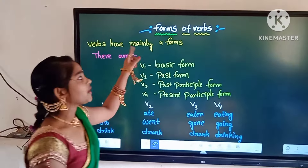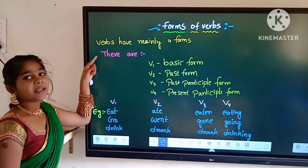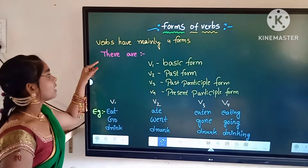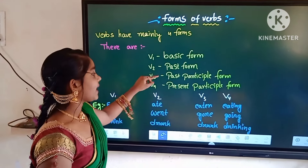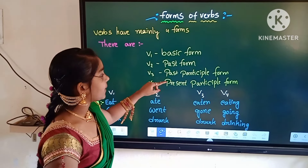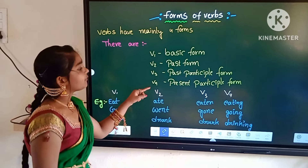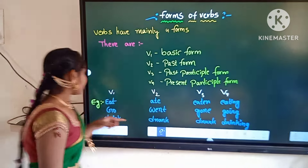Forms of verbs. Verbs have mainly four forms. There are V1 basic form, V2 past form, V3 past participle form, and V4 present participle form.